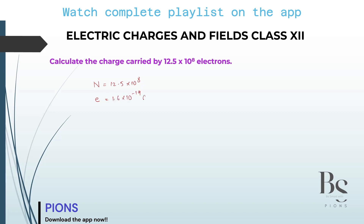Charge on each electron is 1.6 into 10 raised to minus 19 Coulombs. This value you should know by now. So n is our number of electrons and e is the charge of one electron. You have to find the total charge by all these electrons — this charge of 1.6 × 10⁻¹⁹ is due to one single electron.